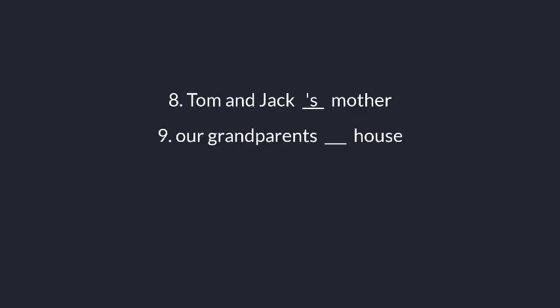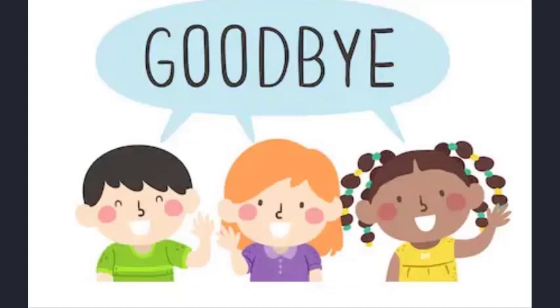Number nine: 'our grandparents ___ house.' Here the noun 'grandparents' ends with an S, so the answer will be apostrophe only, that means S apostrophe. Number ten: 'Gym ___ bicycle.' Here 'Gym' is a singular noun, so the answer will be apostrophe S. Dear students, that's it for today.